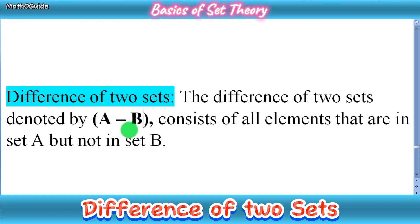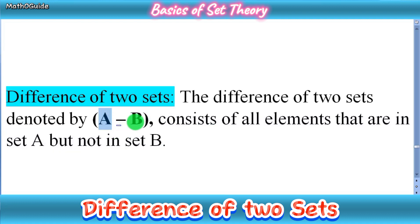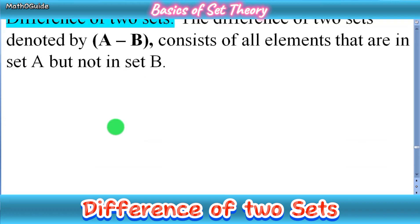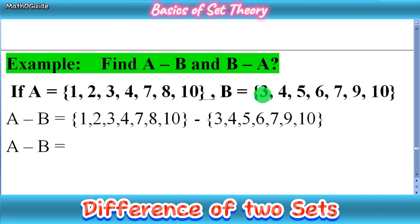When we find A minus B, it consists of all elements that are in set A but not in set B. Similarly, you can find B minus A. Let's understand with an example: find A minus B and B minus A, where set A contains elements 1, 2, 3, 4, 7, 8, and 10, and set B contains 3, 4, 5, 6, 7, 9, and 10.